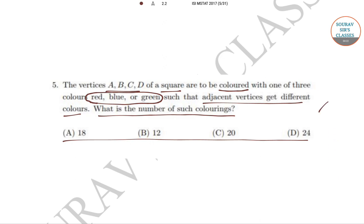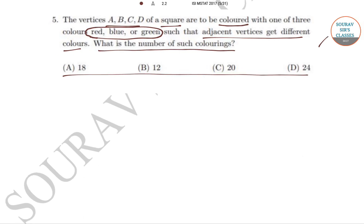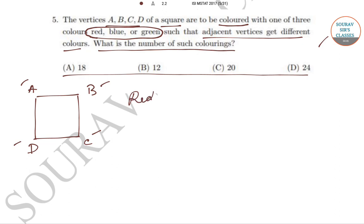Let me draw square ABCD. It has been said that the vertices A, B, C, and D are to be colored with the colors red, blue, and green, and adjacent vertices cannot have the same color. We will use a straightforward case-based principle to solve this.